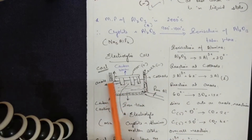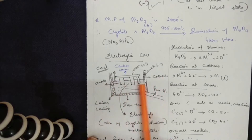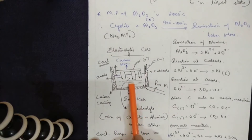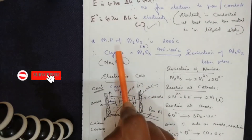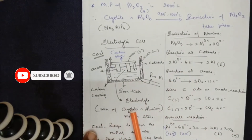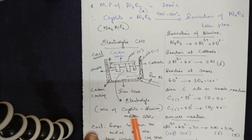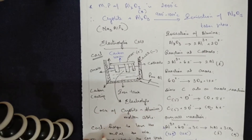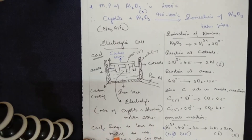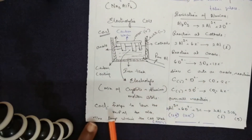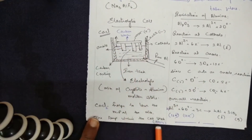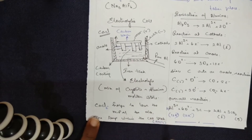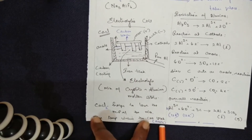At the anode, carbon blocks are used; at the cathode, carbon-coated lining is used. The electrolyte is a mixture of cryolite and alumina in the molten state. Calcium chloride (CaCl2) is added to further lower the melting point of the mixture. The temperature within the cell should be around 1270 Kelvin, or approximately 997 degrees Celsius.